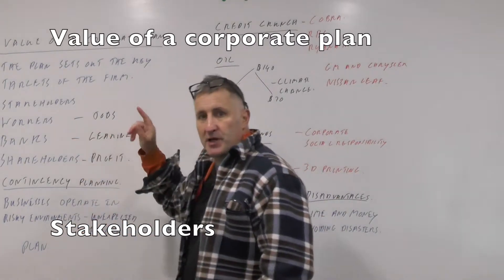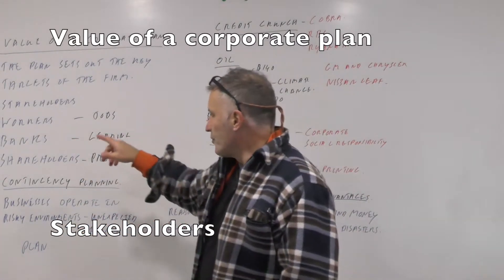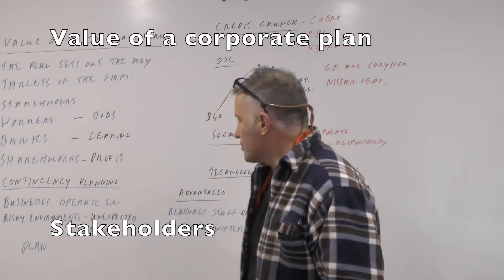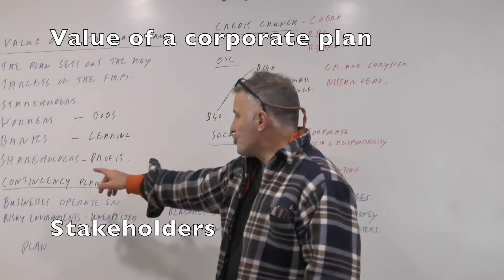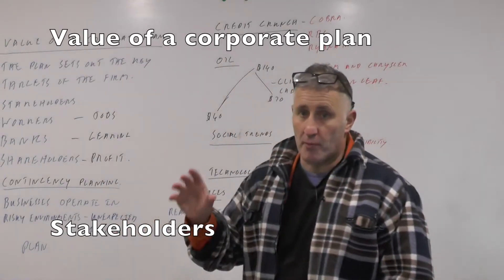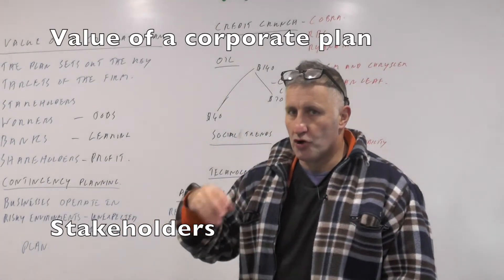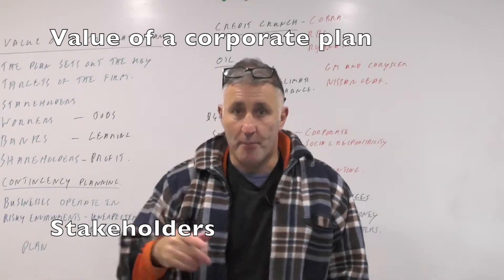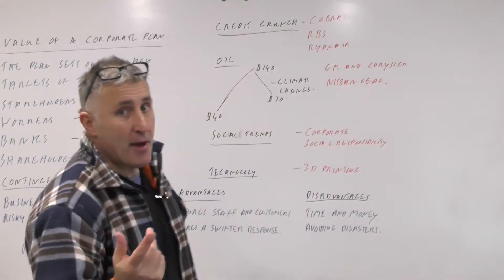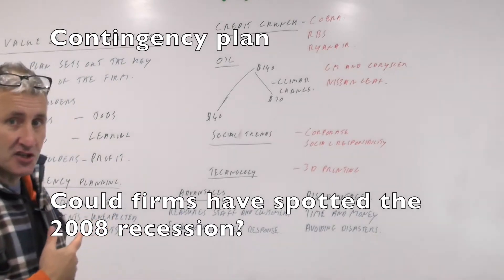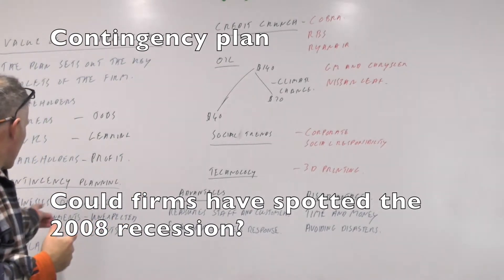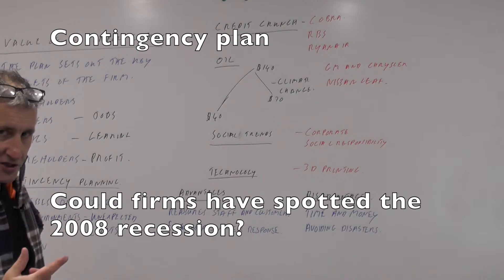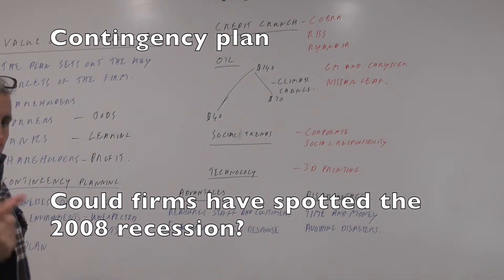The workers will be interested in their jobs. The banks will be interested in the firm's gearing and how the firm is going to increase its profitability. And the shareholders want profit. So you write a corporate plan that tells you what you're going to be doing in the future, and hopefully you will raise money. Part of that corporate plan may well be a contingency plan — a contingency plan covers what you're going to do in a risky year, or when a crisis occurs. So you plan for a crisis.